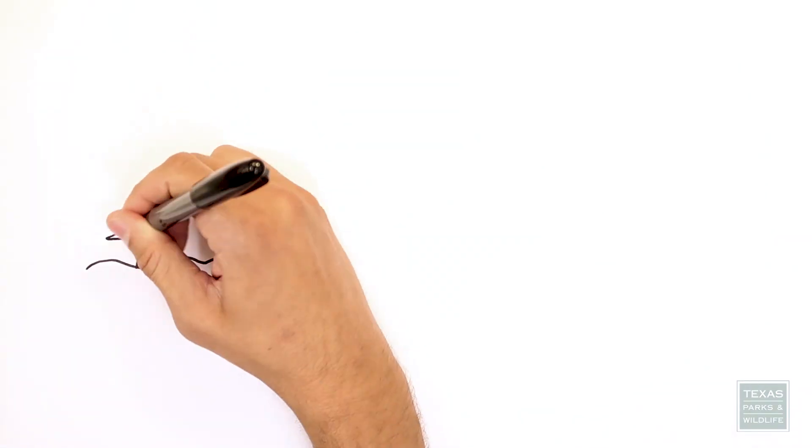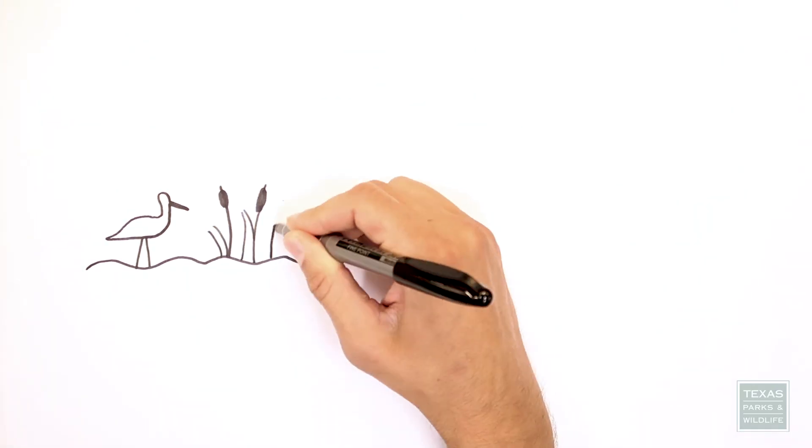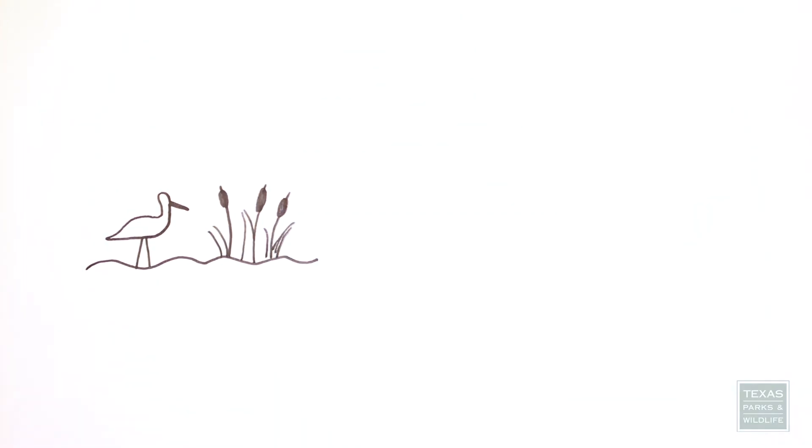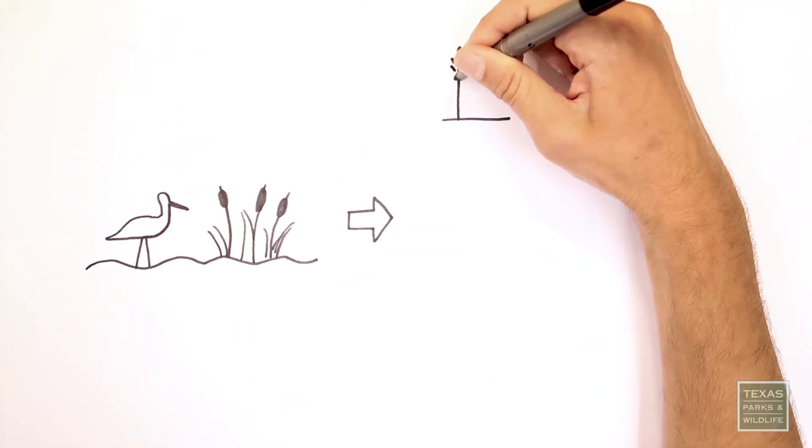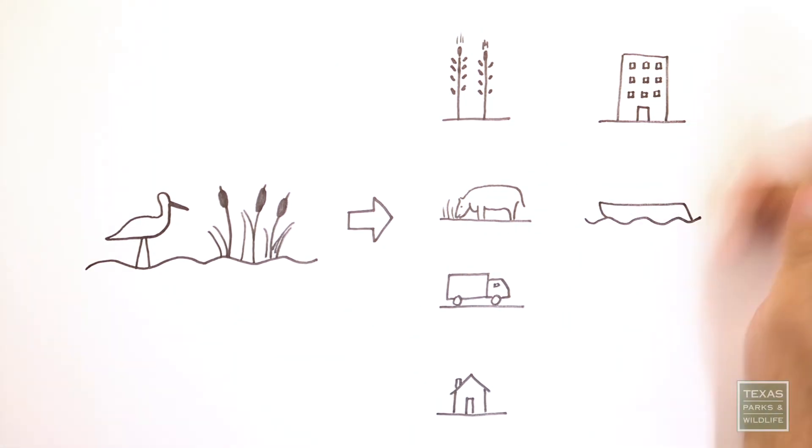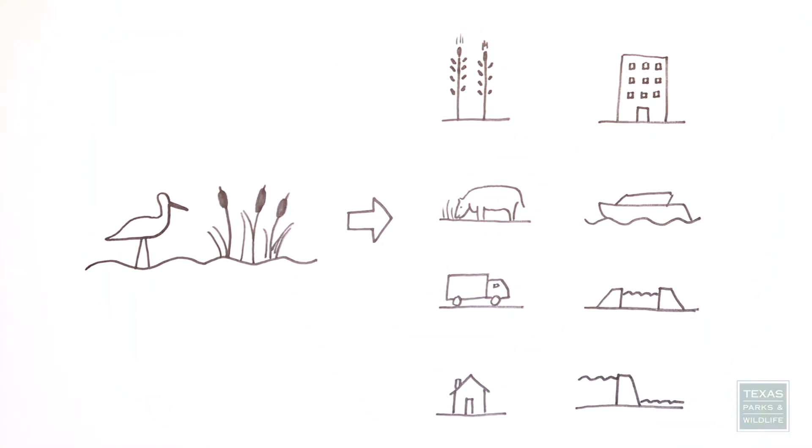But the economic value of wetlands hasn't always been recognized. People who drained and filled wetlands in the past felt they were reclaiming the land for more useful purposes, like cropland, pastures, roads, homes, businesses, waterways, canals, and reservoirs.